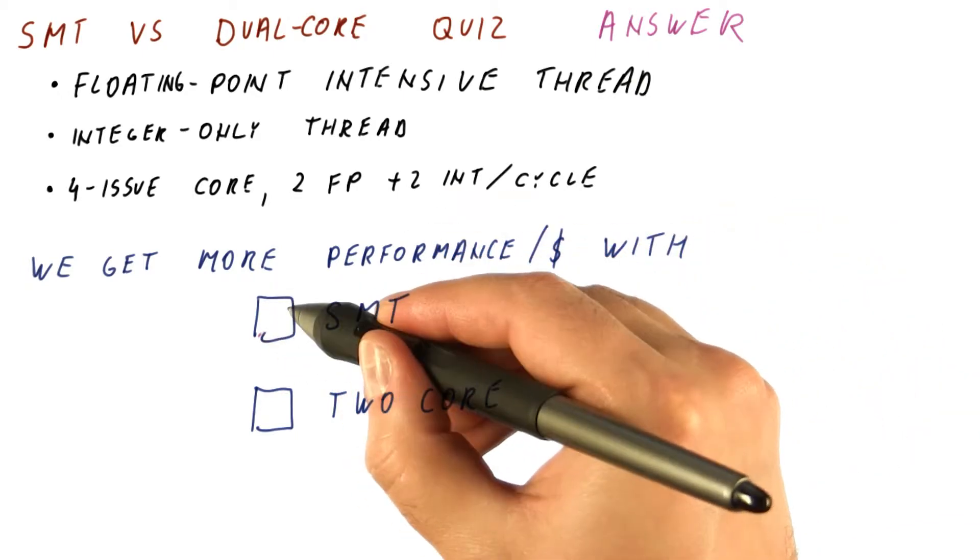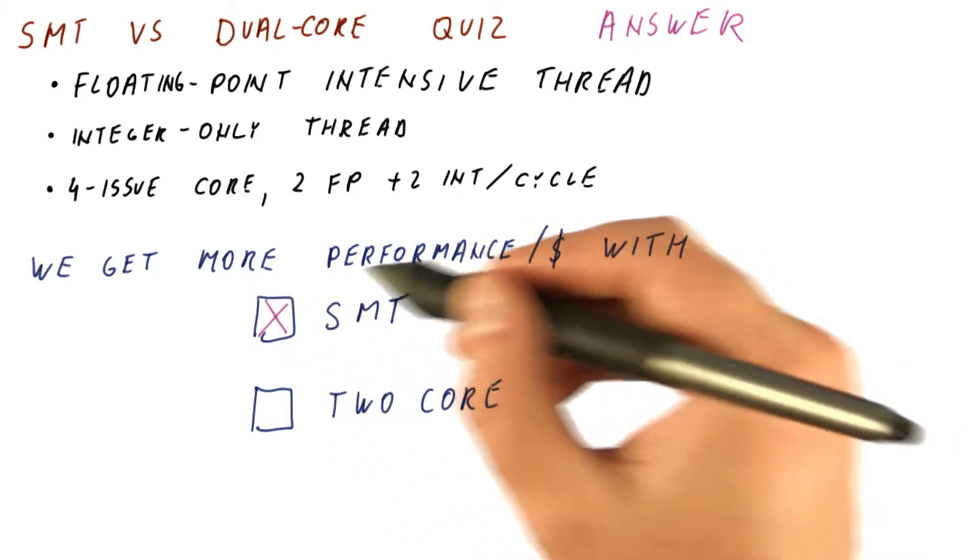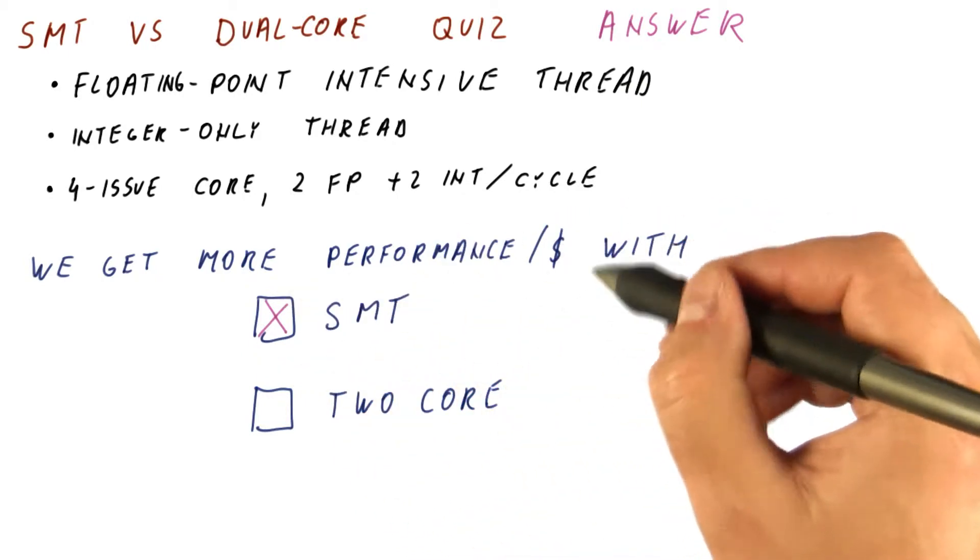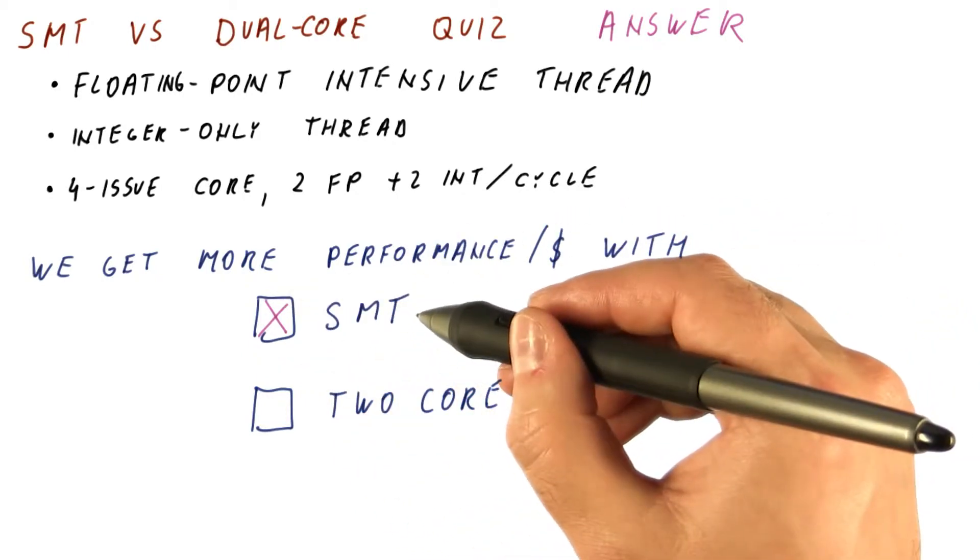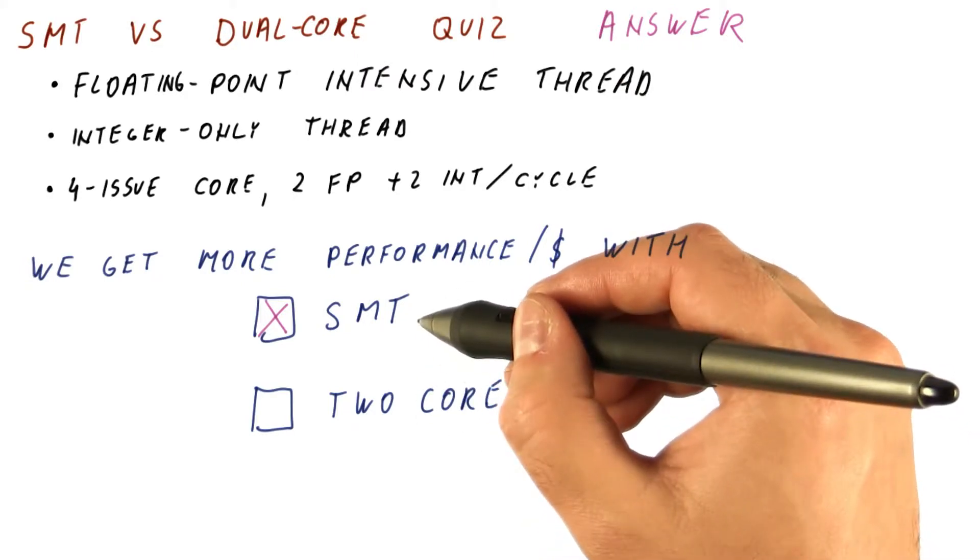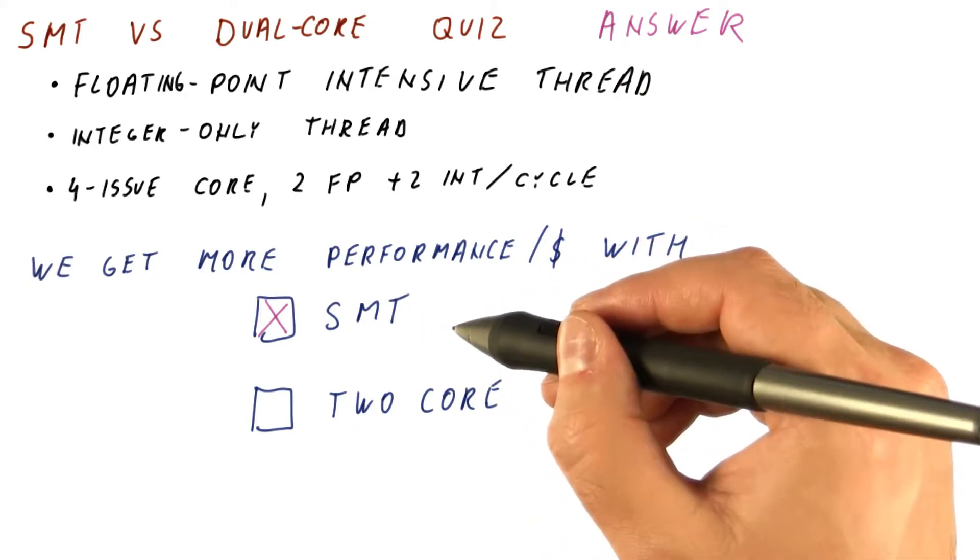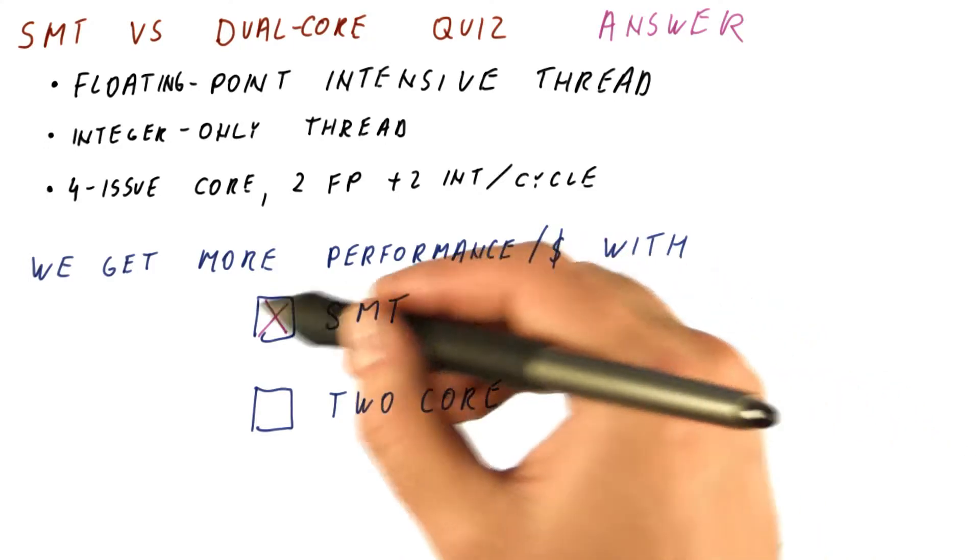As we've seen, this is the more effective approach because the cost here versus here is significantly lower. We get similar performance for almost half the cost.